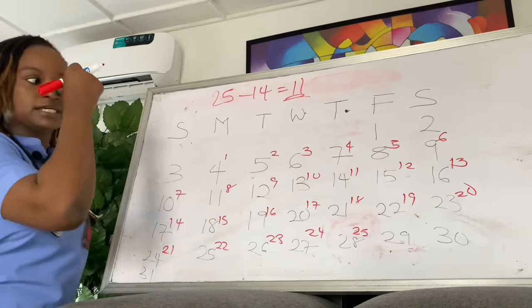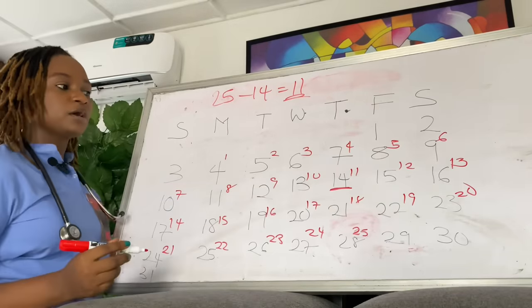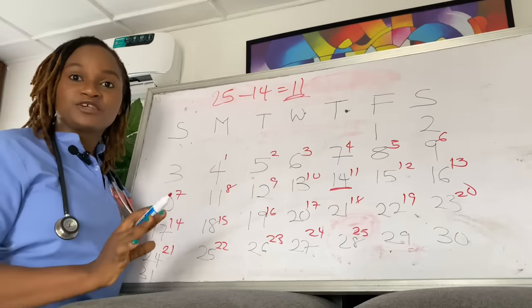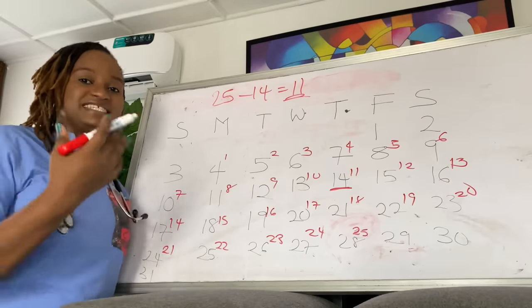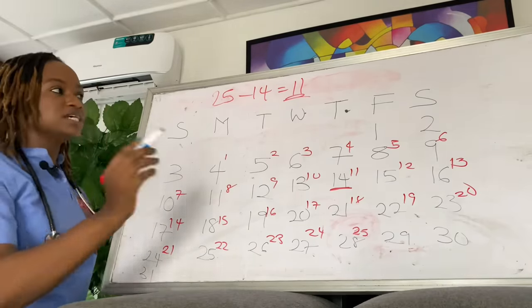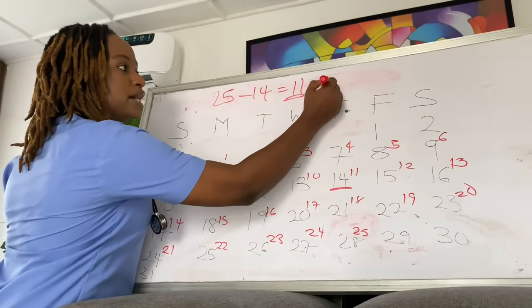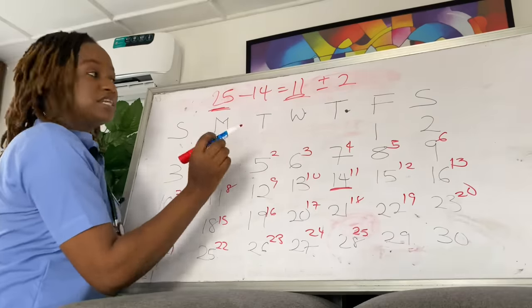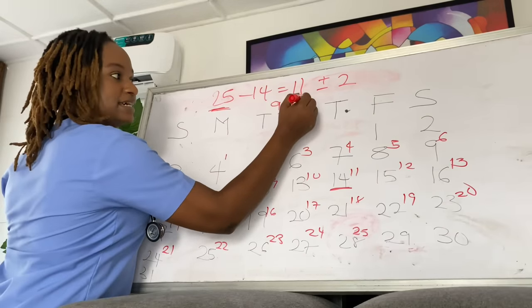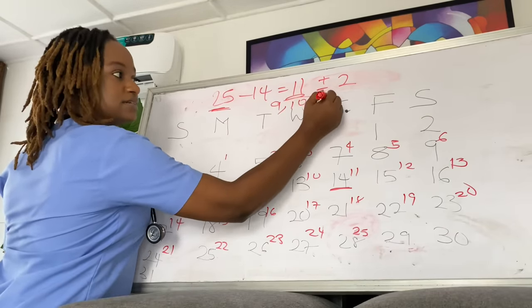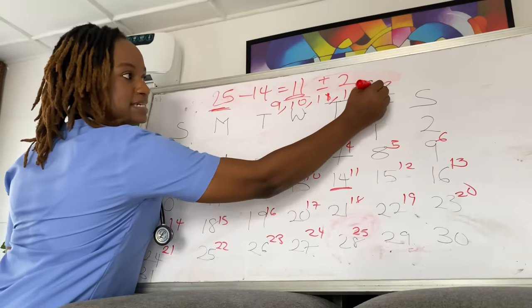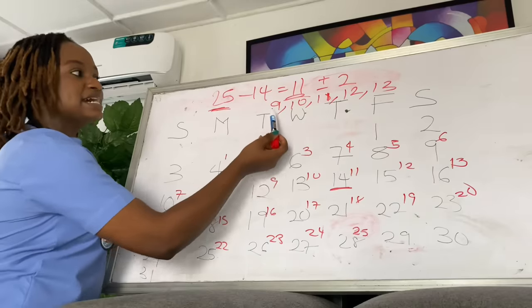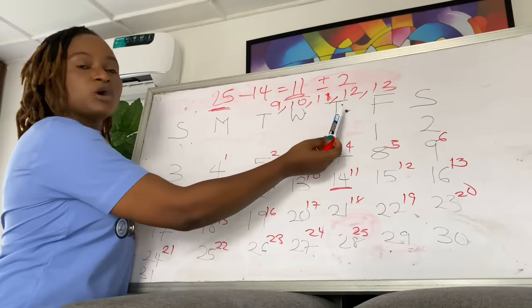However, ovulation is not precise, so this calculation is not extremely accurate — it just gives you an idea of when you should ovulate. What you do is apply plus or minus 2 days. So for a 25-day cycle, she could ovulate on Day 9, 10, 11, 12, or 13.